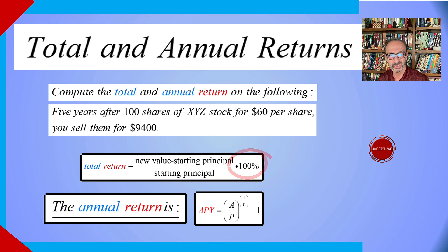The annual return is called APY, annual percentage yield. We follow this formula, which is A as the new value divided by the principal, which is $6,000, the starting amount.